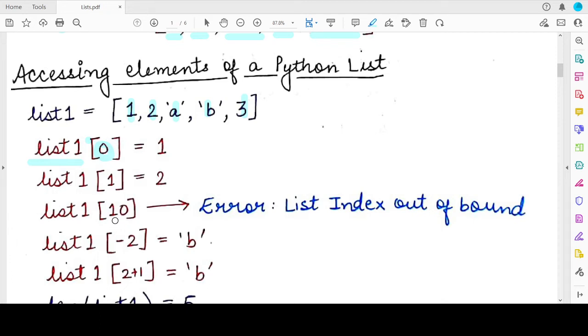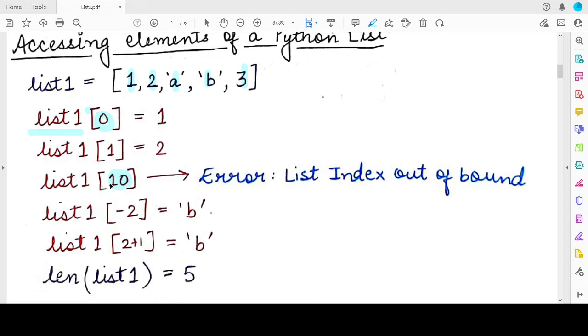Now, if you specify a value as an index which is greater than the length of the list, then you will get an error that the list index is out of bound. Because in this case, the list has 5 elements and the index values range from 0 to 4. So the maximum index value, positive index value that you can give here is 4. So this particular instance, this particular case will give you an error.